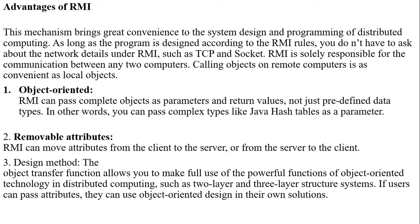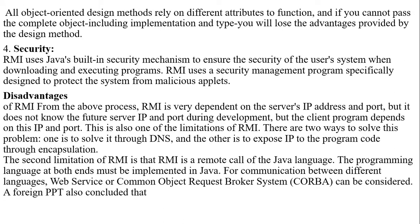Second is removal of attributes: RMI can move attributes from client to server or from server to client. Third is design method: the object transfer function allows full use of powerful object-oriented technology features in distributed computing, such as two-layer or three-layer structure systems.